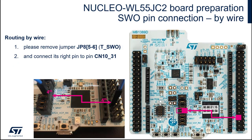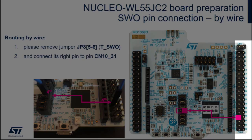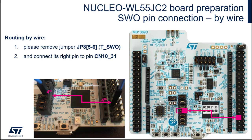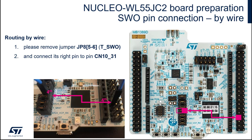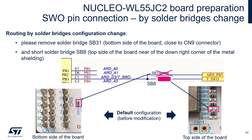The simplest way to connect SWO on PB3 is to use a wire. In this case we need to connect one of the pins on CN10, which we can see on the right side of the board — it is the fourth pin on the left side of CN10, counting from the bottom. We need to connect this pin with the underscore SWO pin located in the jumper area within the central part of the board, as shown in the pictures on screen.